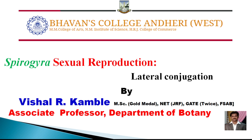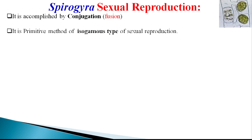In this video I will explain the concept of sexual reproduction in Spirogyra with reference to the lateral conjugation process. Sexual reproduction is more often accomplished by the conjugation mechanism, which is also called fusion. It is considered one of the primitive methods of isogamous type of sexual reproduction.